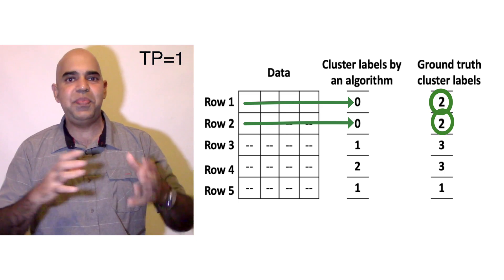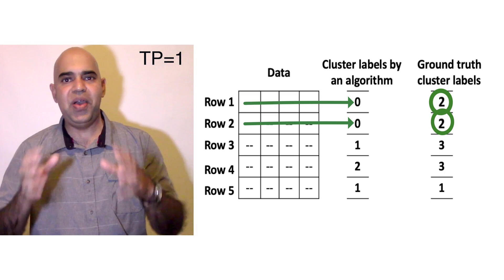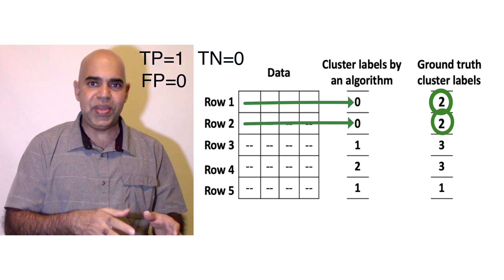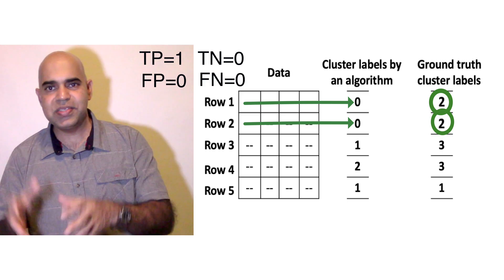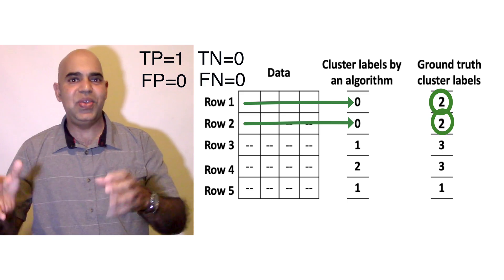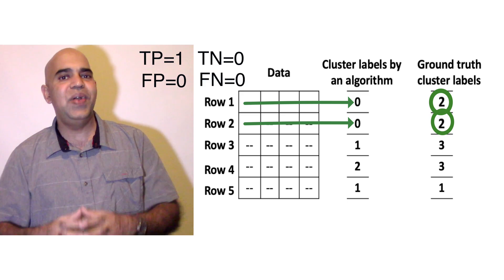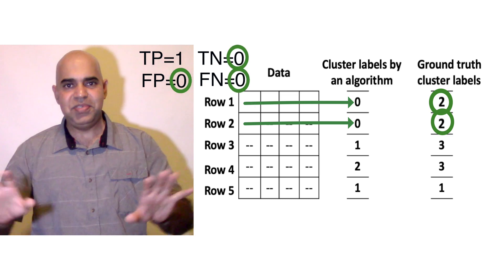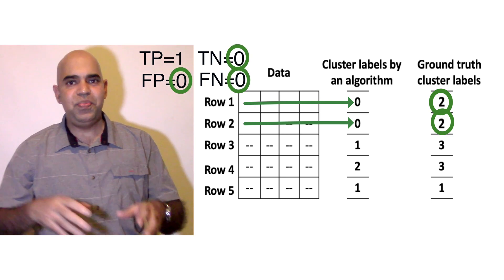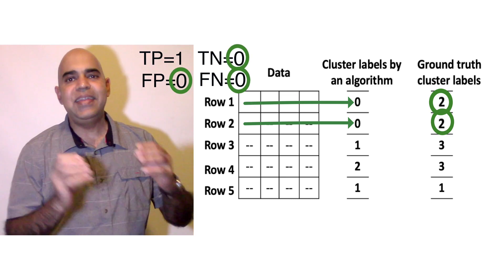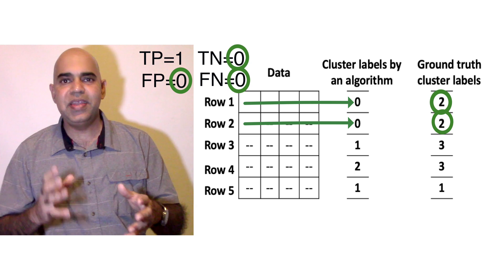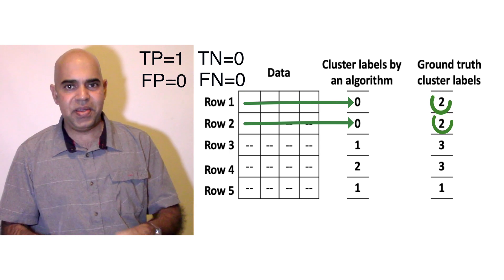Let us also keep track of how many false positives, true negatives, and false negatives we have seen so far. Of course, the count is zero so far for FP, TN, and FN. Let us move to the next pair.